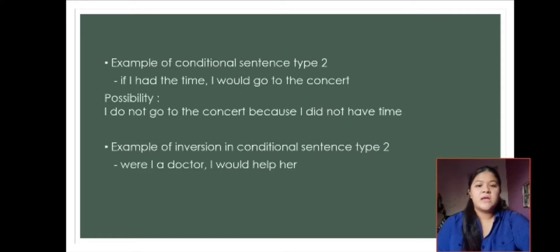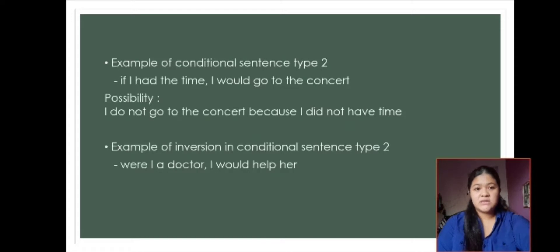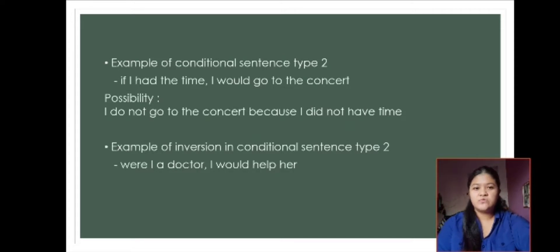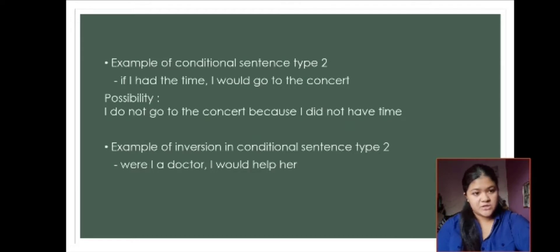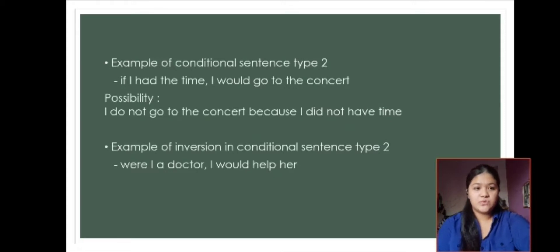An example of inversion in conditional sentence type 2: 'Were I a doctor, I would help her.' Here 'were' is the auxiliary, 'I' is the subject, 'a doctor' is the complement, then 'I' is the subject again, 'would' is the modal, 'help' is verb 0, and 'her' is the object.